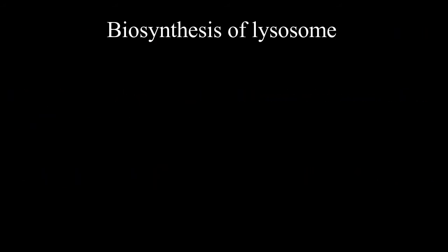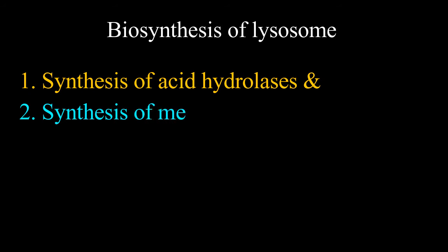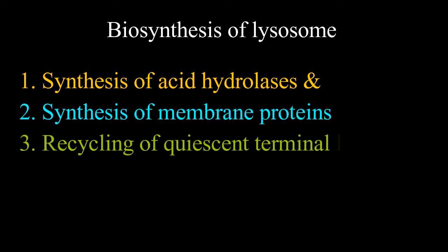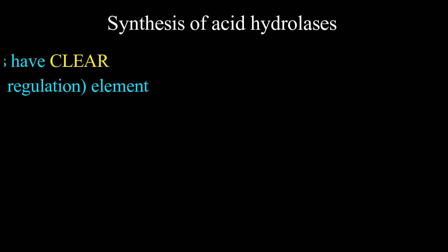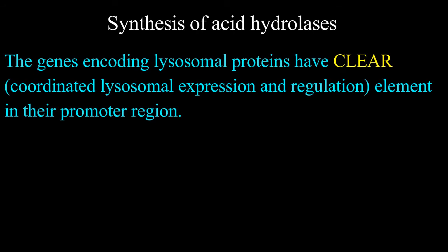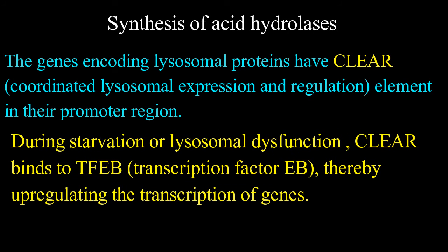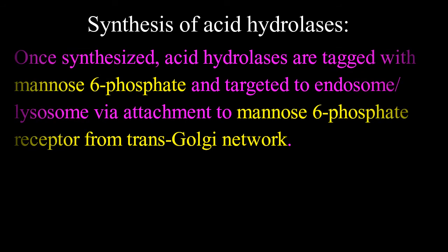Synthesis of lysosomes: The biosynthesis of lysosomes involves three steps — synthesis of acid hydrolases, synthesis of membrane proteins, and recycling of quiescent terminal lysosomes. First, synthesis of acid hydrolases. The genes encoding lysosomal proteins have CLEAR, that is coordinated lysosomal expression and regulation element, in their promoter region. During starvation or lysosomal dysfunction, CLEAR binds to TFEB, that is transcription factor EB, thereby up-regulating the transcription of genes. Once synthesized, acid hydrolases are tagged with mannose-6-phosphate and targeted to the endosome-lysosome via attachment to mannose-6-phosphate receptors from the trans-Golgi network.